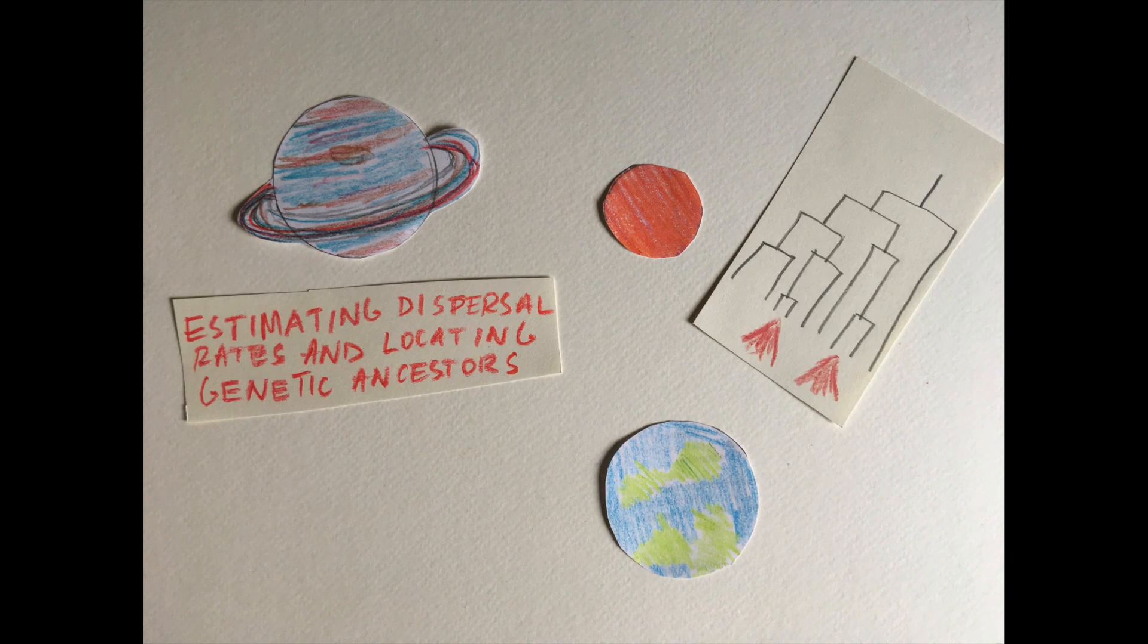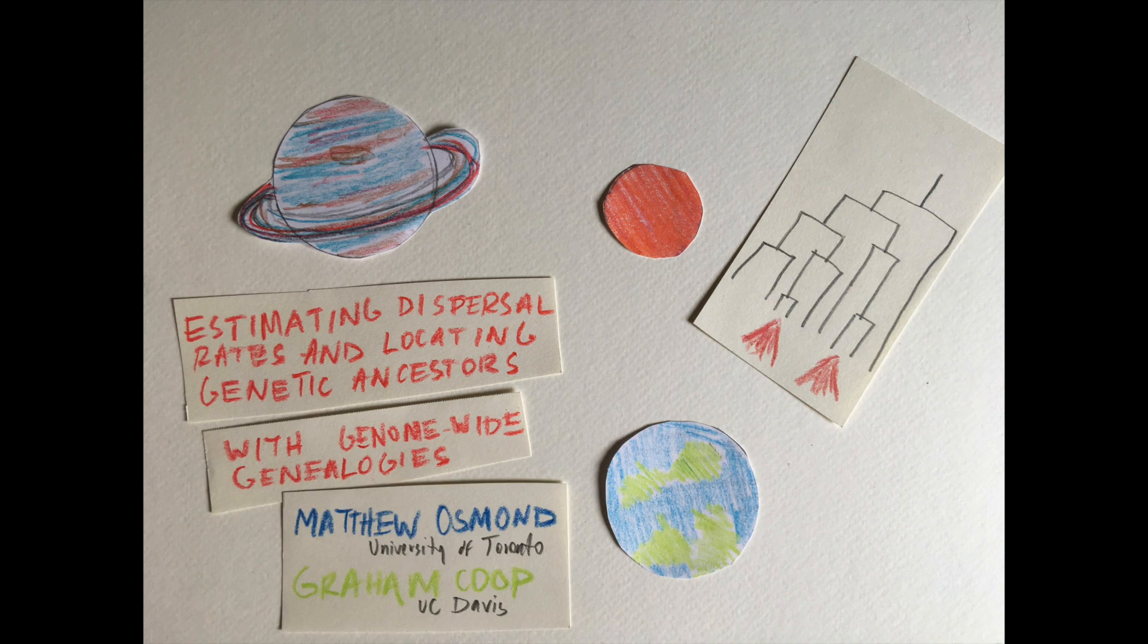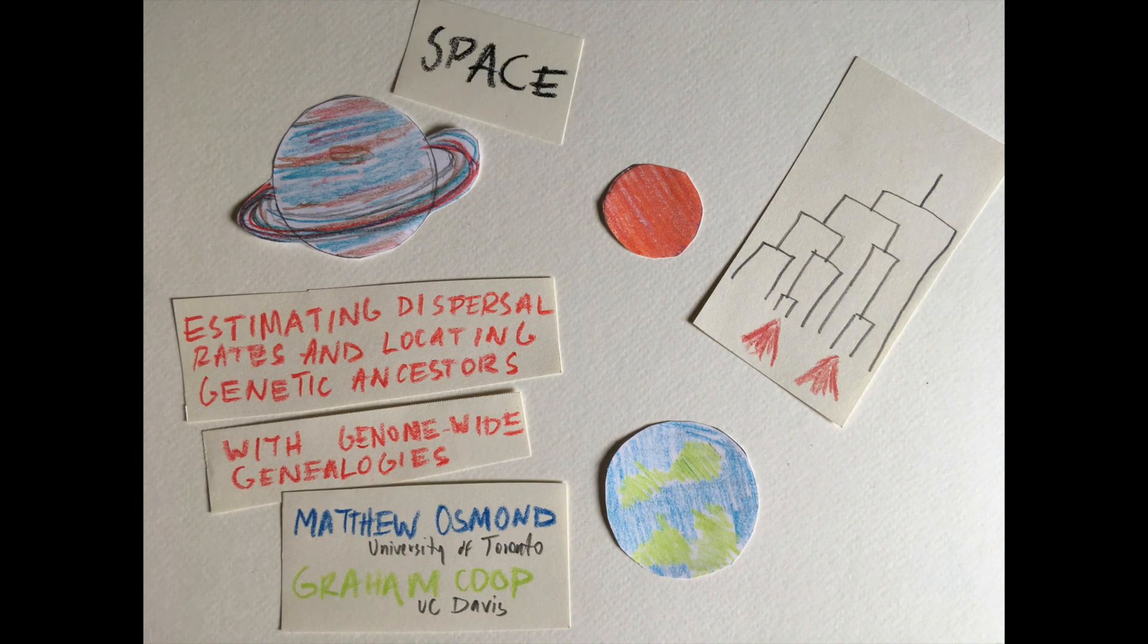Estimating Dispersal Rates and Locating Genetic Ancestors with Genome-Wide Genealogies by Matthew Osmond and Graham Coop, affectionately known as space trees.